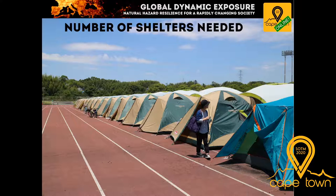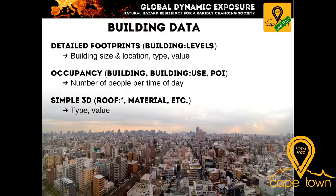I hope I was able to make the case for good building data in OSM and convince you that every building detail can contribute to mitigating and understanding risks. We need the footprints of all buildings, preferably with the number of stories — these provide location, size, hints to building type, and replacement value. The occupancy coded in the building tag, building use tag, or through points of interest helps assess the number of people per time of day. Simple 3D tags describing the roof and outside material can give further clues to type and value. All these extra tags provide valuable information that we translate into an exposure model to understand building-specific risk.